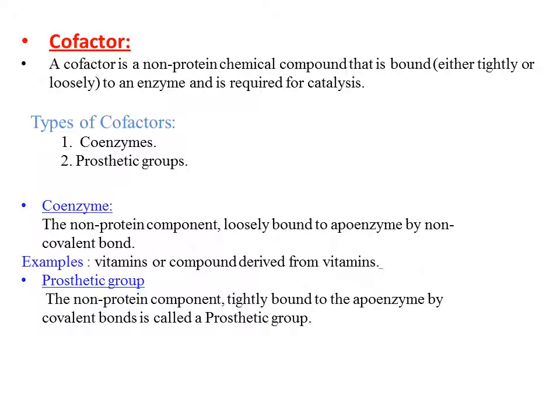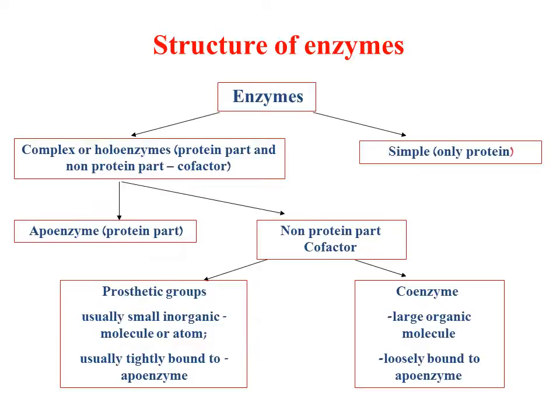A cofactor is a non-protein chemical compound that is bound either tightly or loosely to the enzyme and is required for catalysis. Types of cofactors: a coenzyme is a non-protein compound loosely bound to the apo enzyme by non-covalent bonds — this bond is weak and non-permanent; an example is vitamins. A prosthetic group is a non-protein compound tightly bound to the apo enzyme by covalent bonds — this bond is strong and permanent. An illustrative diagram summarizes what has been mentioned.